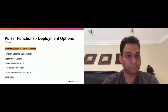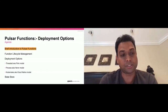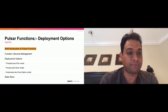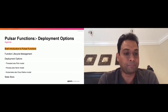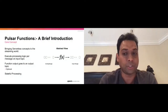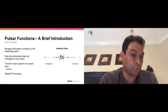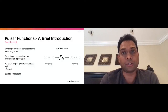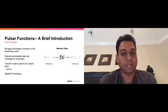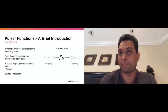Briefly introducing functions: Pulsar Functions bring serverless concepts into the streaming world. The idea is that you give a function F, and this function is executed on every message of one or more incoming topics. Every time a message arrives, you invoke this function. The function has an output that goes to an output topic. You can think of functions as bridging a gap between an input and an output topic. The unique thing about Pulsar Functions is that we do stateful processing.